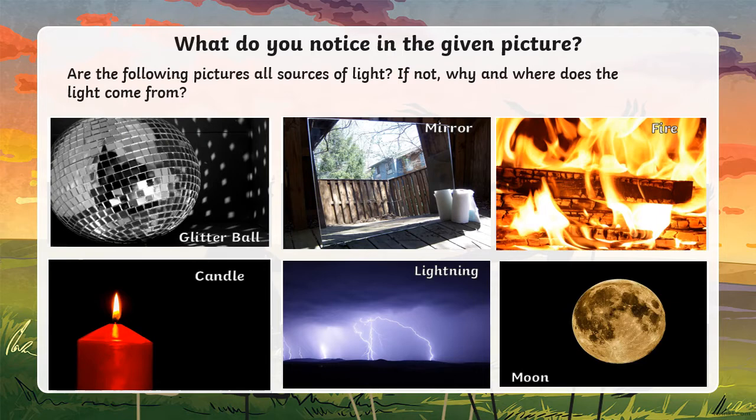Which ones are not? Glitter ball, mirror, and moon. These are not sources of light. Why are they not sources? Because they don't have their own light. They reflect light from others. That's how they get the light. Moon gets the light from the sun, glitter ball from any sources that is close by, even the mirror.